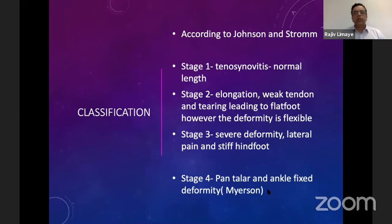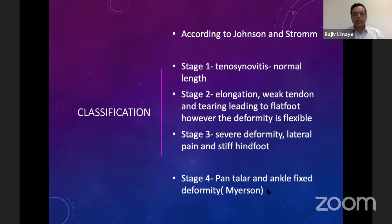The classification is done by Johnson and Strom and recently modified by Mark Myerson. The stages are important in order to decide the management plan. Stage 1 is the most mild condition, associated with tenosynovitis but a normal length tendon. In stage 2, the tendon is elongated, it is weak and leads to micro tears causing flat foot deformity, which can be subdivided according to the latest classification. In stage 3, the deformity is severe with lateral pain due to impingement and a stiff hindfoot, mainly in the subtalar joint. In stage 4, there is deformity in the ankle joint, usually valgus deformity, as classified according to Myerson's description.